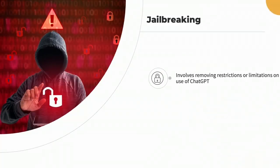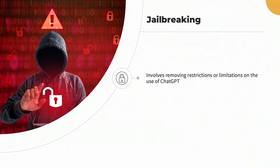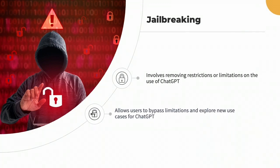Jailbreaking refers to the practice of removing restrictions or limitations on the use of ChatGPT. Some developers may limit the types of prompts that can be used with a model or restrict the amount of information that can be included in a prompt. Jailbreaking can allow users to bypass these limitations and explore new use cases for ChatGPT, but it can also lead to unintended consequences, such as the generation of biased or inaccurate responses.